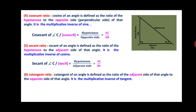Sixth: cotangent ratio. Cotangent of an angle is defined as the ratio of the adjacent side to the opposite side of that angle. It is the multiplicative inverse of the tangent ratio. Therefore, cotangent of angle C, written as cot θ, is equal to adjacent side upon opposite side, that is BC upon AB. These are the six trigonometric ratios.